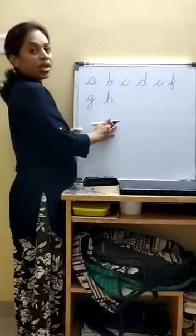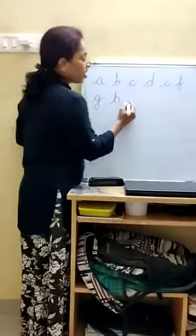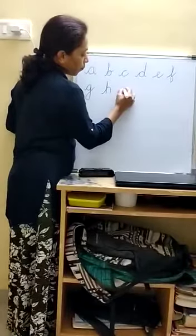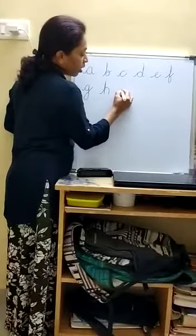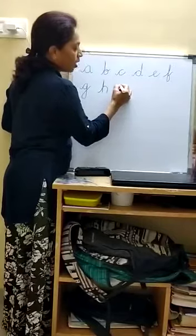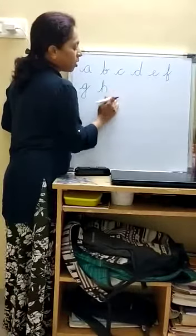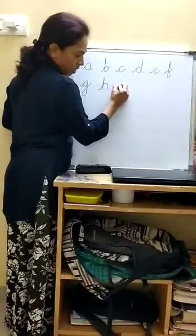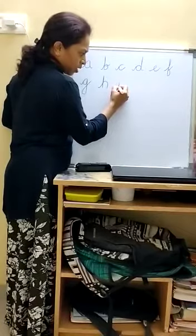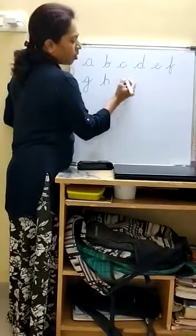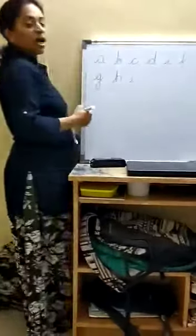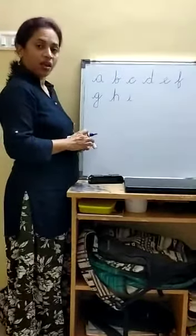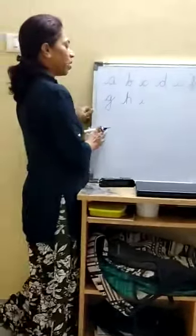Next is I. Name of the letter is I. Sound of the letter is E. In between the second and third line, starting from a tail, go to the second line, come back to the third line, and small dot. I says E. Ink. Igloo.